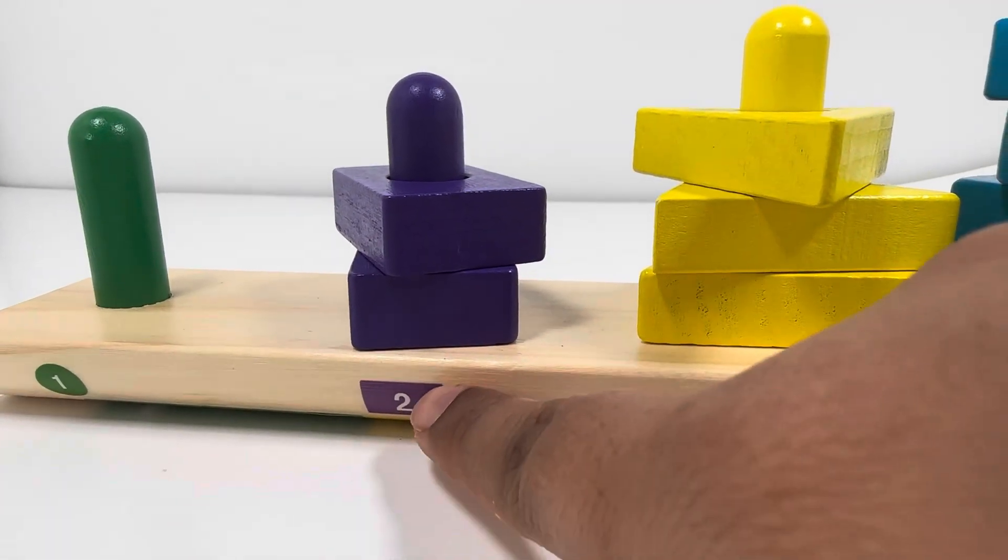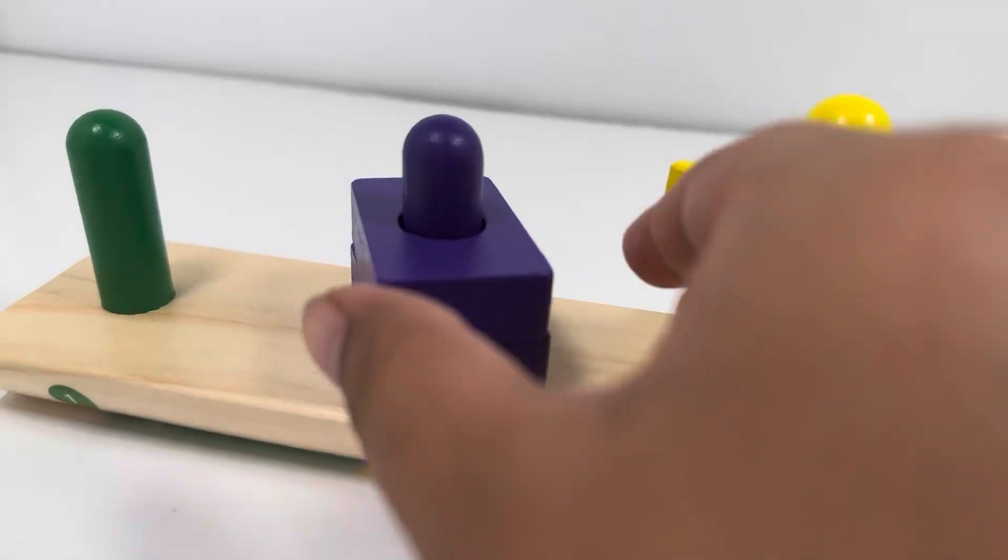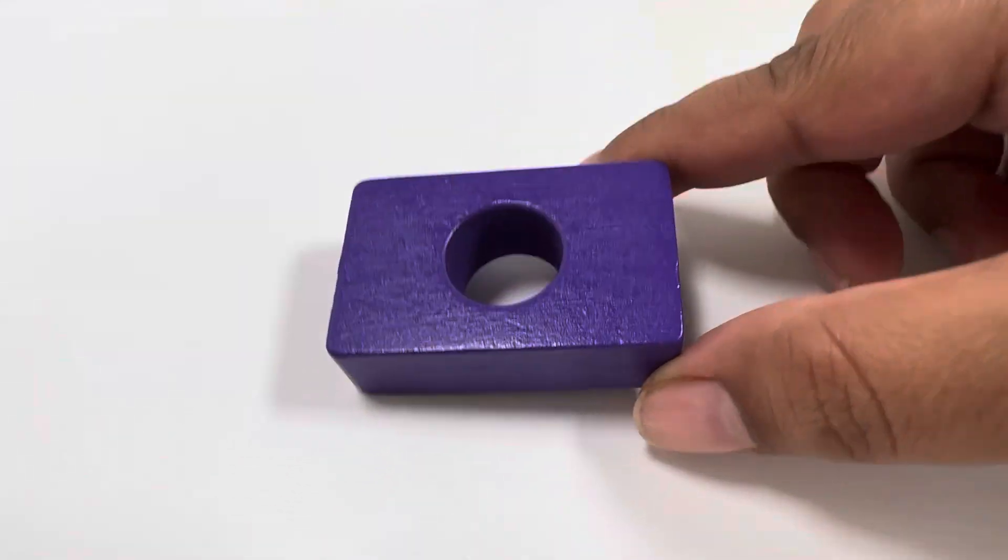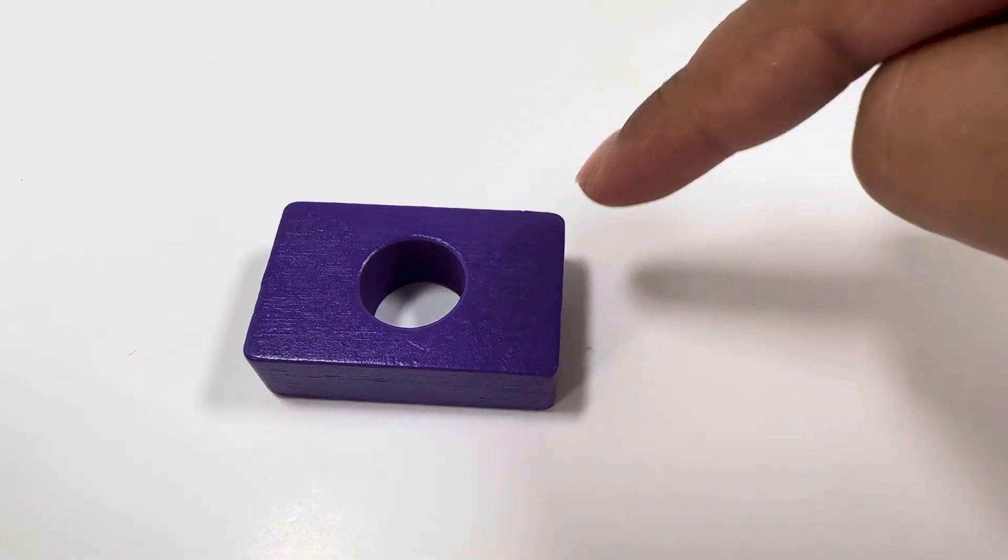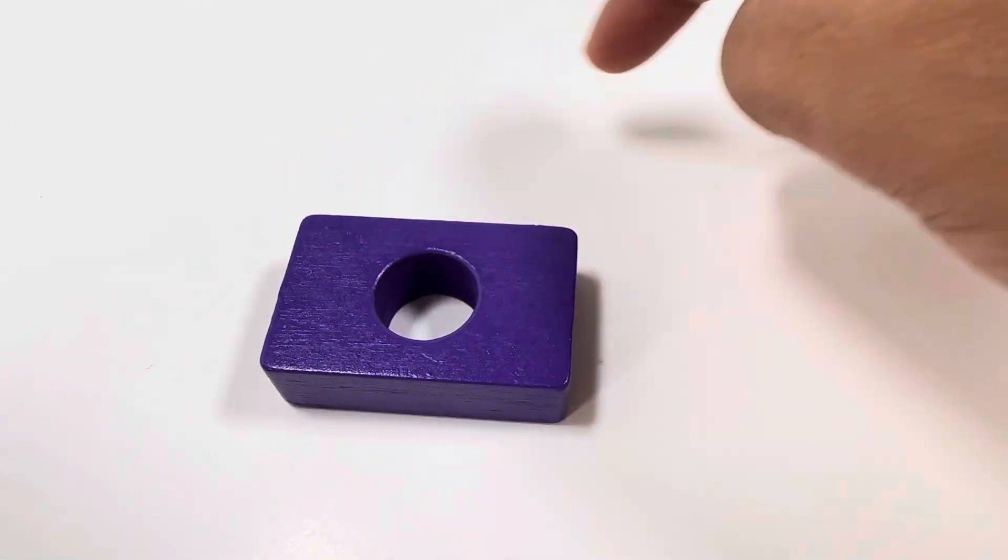The second shape is purple color and it's a rectangle. A rectangle has four sides: one, two, three, four. It's like a door.